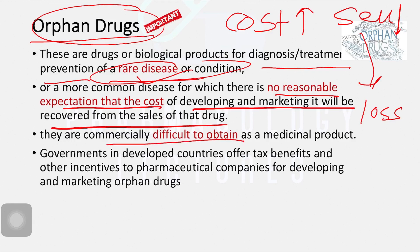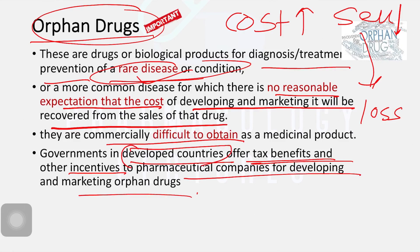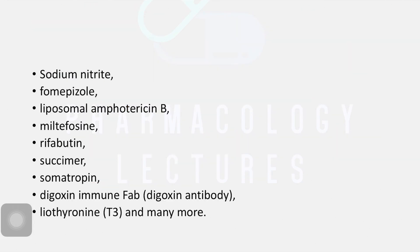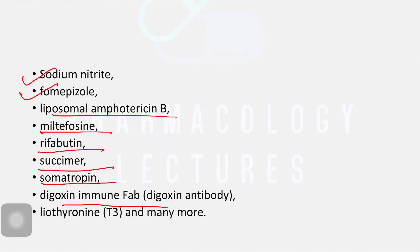To encourage companies — because patients with rare conditions still require these drugs — governments in developed countries offer tax benefits and other incentives to pharmaceutical companies for developing orphan drugs. This helps decrease their losses and allows them to gain some profit. Examples of orphan drugs include sodium nitrite, fomepizole (a benzodiazepine antagonist), liposomal amphotericin B for fungal diseases, miltefosine for kala-azar, rifabutin for tuberculosis, digoxin antibody for digoxin poisoning, and liothyronine.